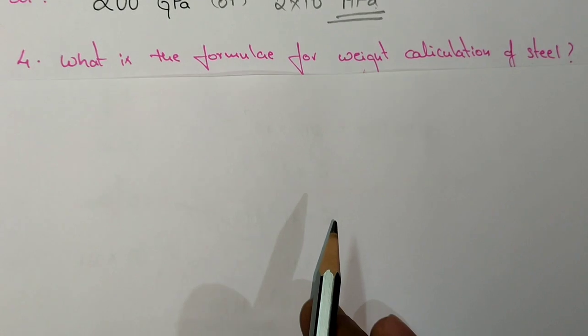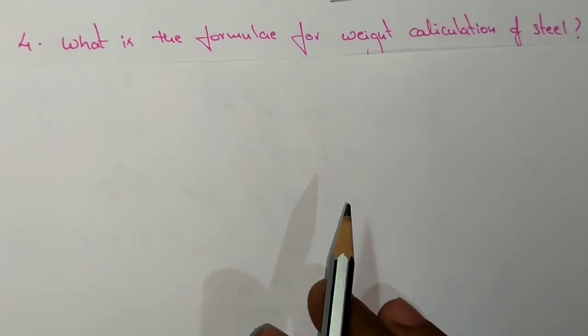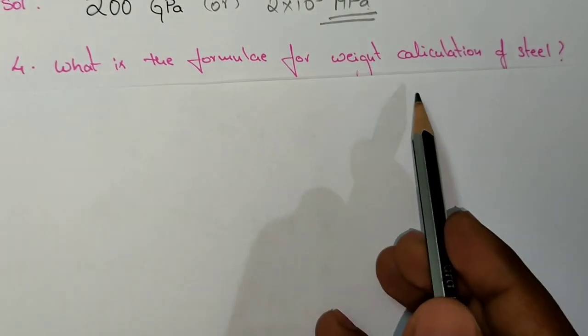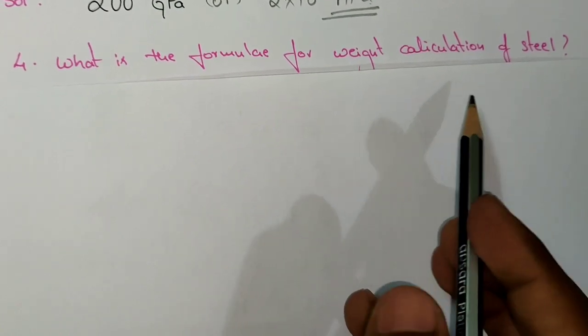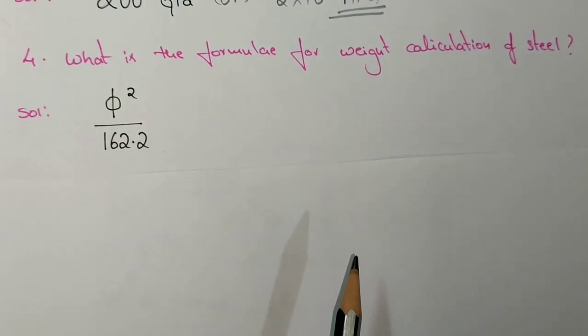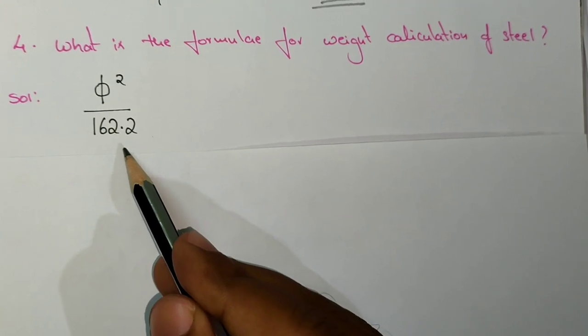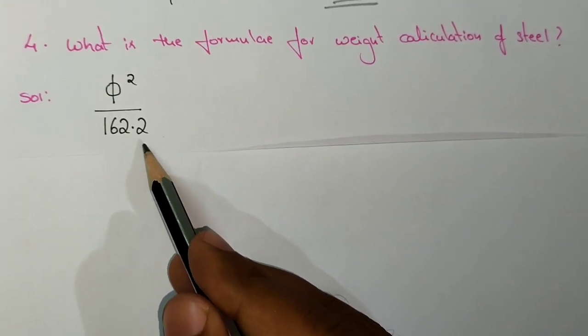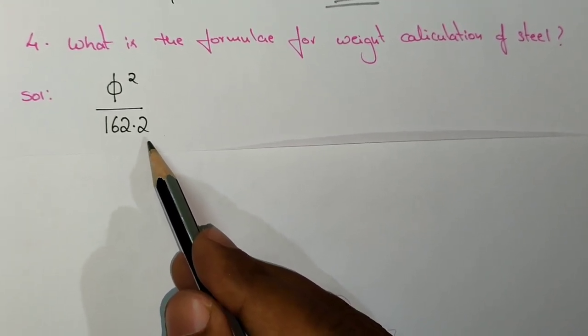The next question is: what is the formula for weight calculation of steel? Weight calculation of steel is given by the formula d²/162.2. The derivation for this formula was explained in our channel, and the link will be given in the description.